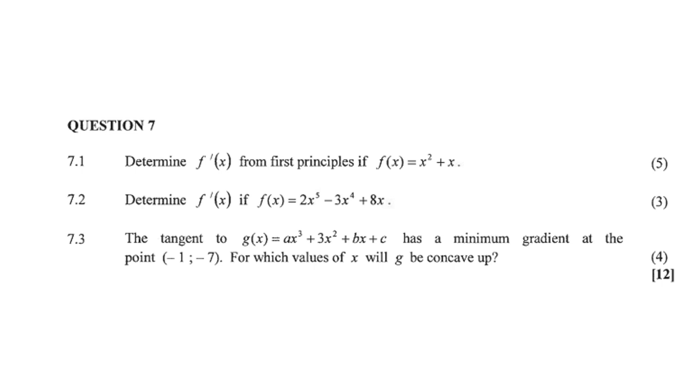And 7.3, the tangent to g(x) = ax³ + 3x² + bx + c has a minimum gradient at the point (-1, -7). For which values of x will g be concave up?